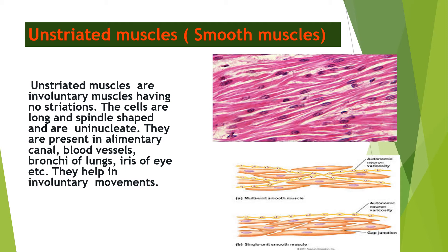There are two pictures. The first one is the actual picture of the muscle which you can see has spindle shaped cells, and the second picture is the diagrammatic picture which you can draw in your notebook.